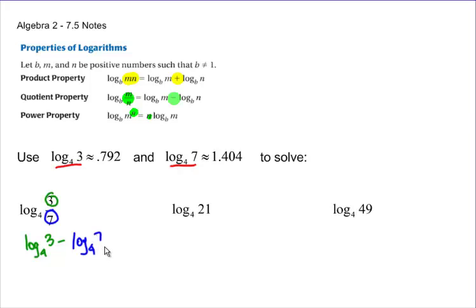Then I'm going to come back up here and borrow from my decimals. So I've got 0.792 minus 1.404. When you put those things together, you get negative 0.612.